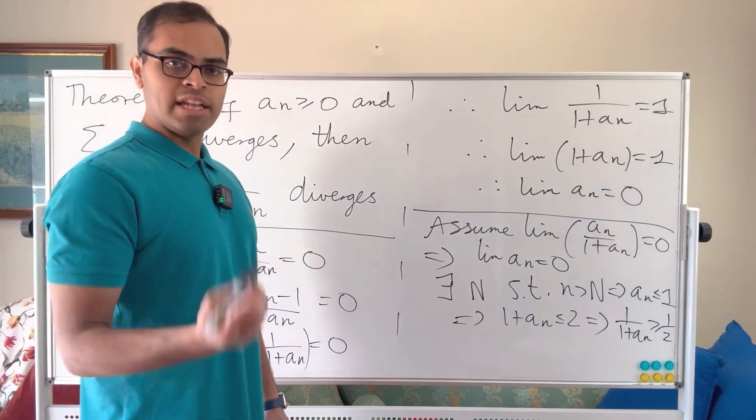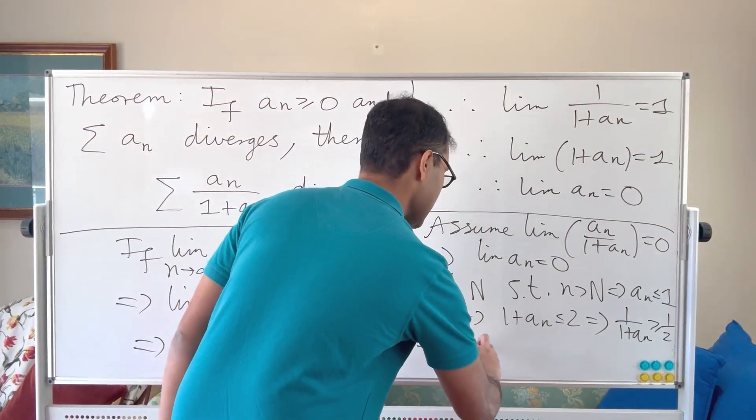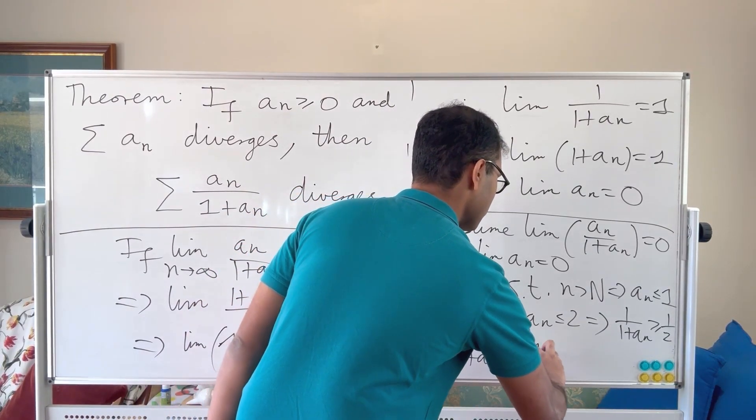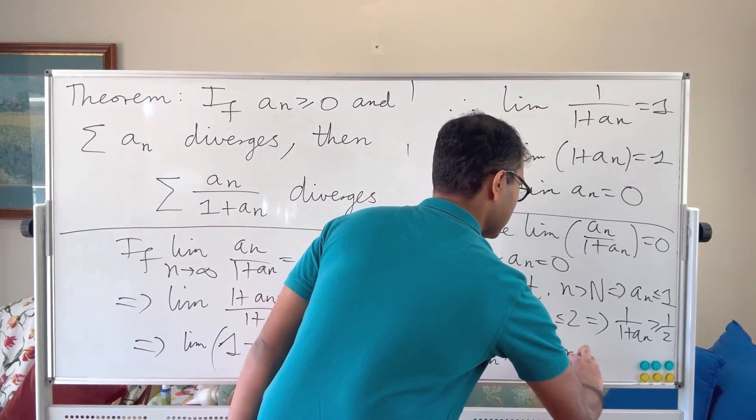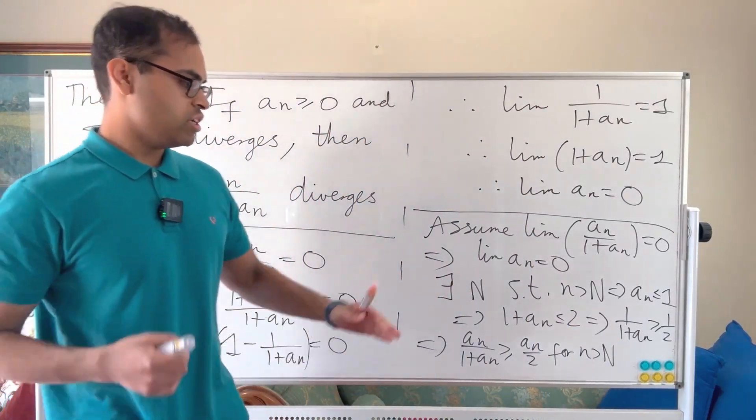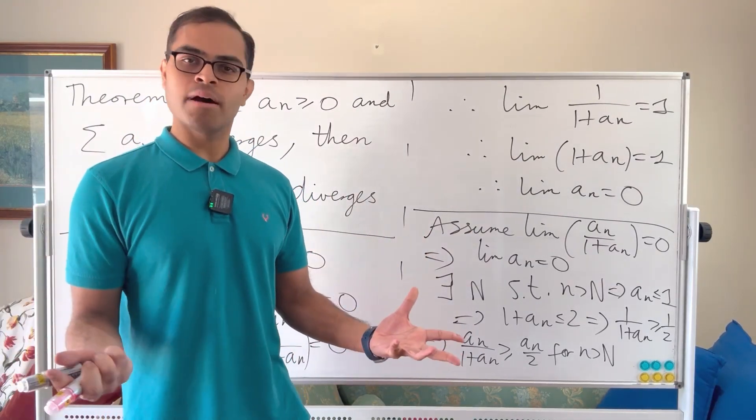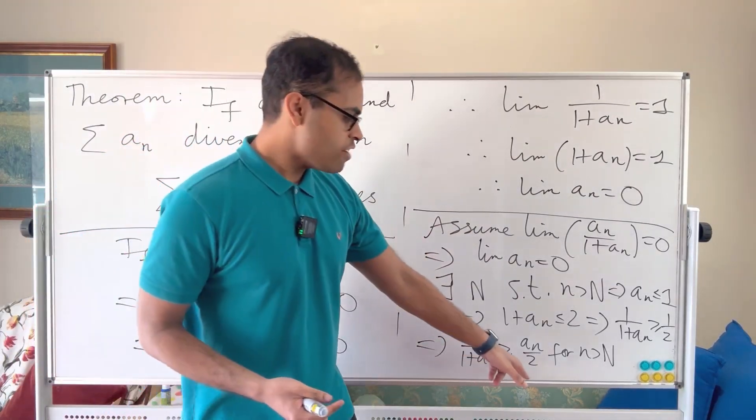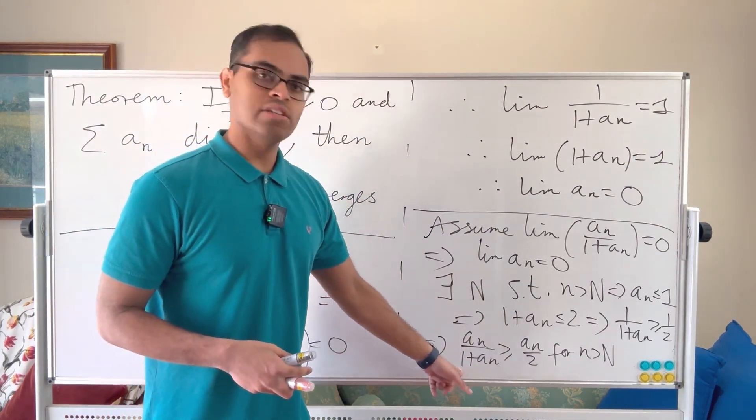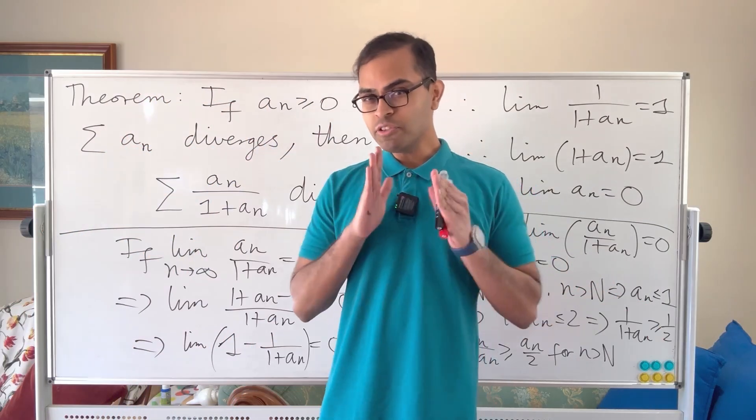Now what we can do is multiply both sides by an, knowing they're not negative, so therefore that implies that an over 1 plus an is going to be greater than or equal to an over 2 for n greater than big N. But now we know that the tail end of any divergent series has to diverge because the first few terms is finite in number, so that sum is finite. So therefore an over 2 for n greater than N is a divergent series, therefore this is also a divergent series sum an over 1 plus an. There's the proof.